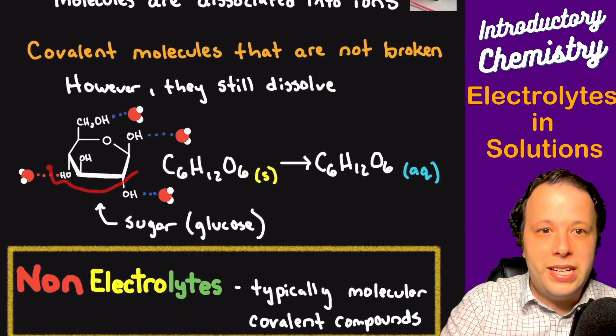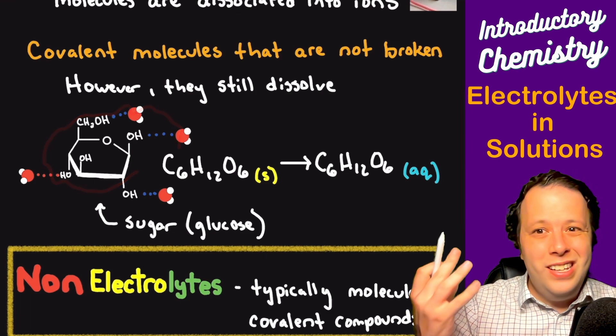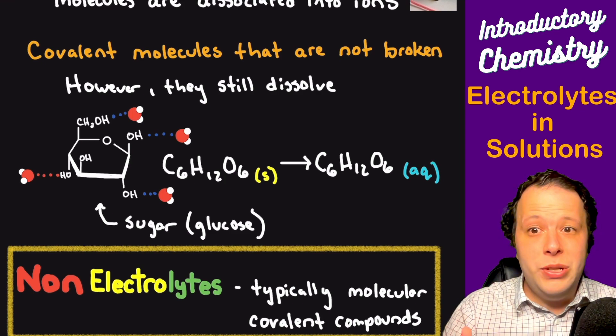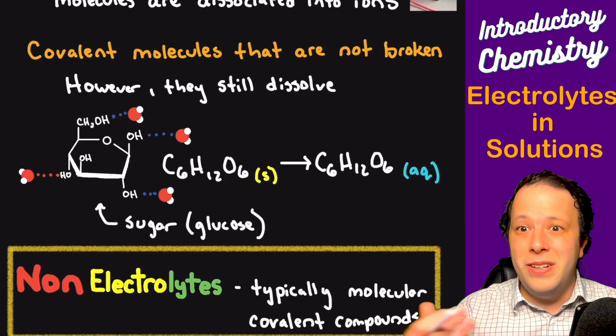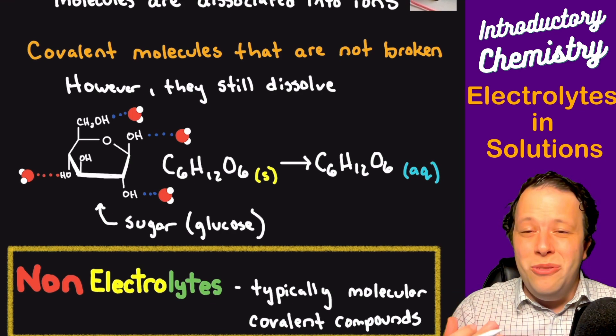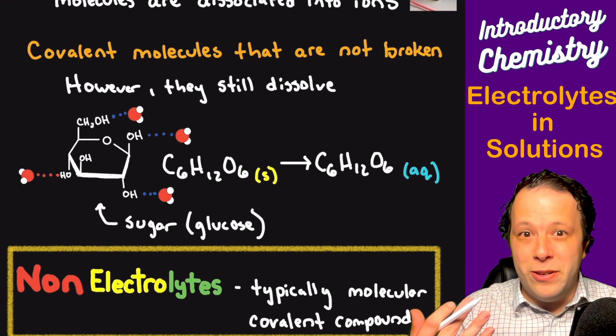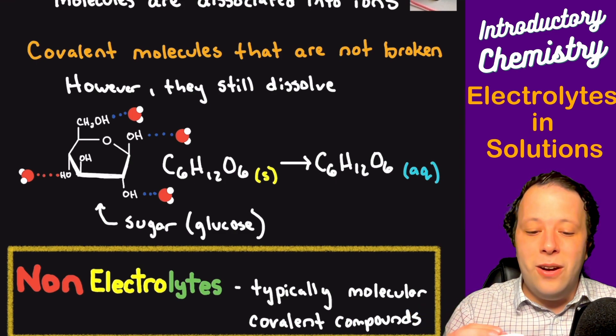Well for example, one of them could be like a sugar molecule here. If you have sugar, this thing does not break apart into ions. But you know that sugar dissolves, right? You put it in your tea, your coffee, different fruit juices. You know that it dissolves in all of them. It's something that's in a lot of our beverages.